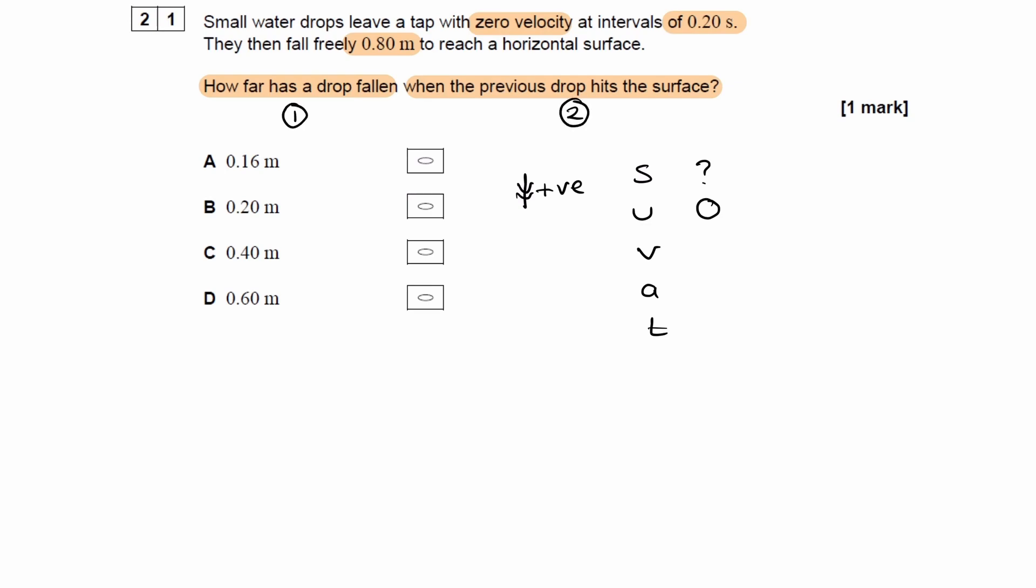So we don't have the final speed of drop one. We don't know what that is. And we also don't have the time. We don't know how long it's been falling for. We know what the acceleration is. Acceleration would just be 9.81. So in order to do SUVAT we have to have three variables known, and only then can we work out a fourth. We only have two right now, so we have to work out one more.